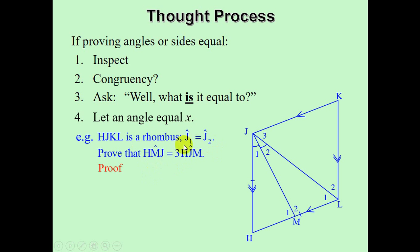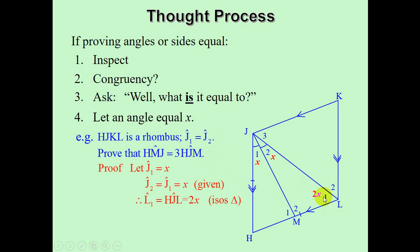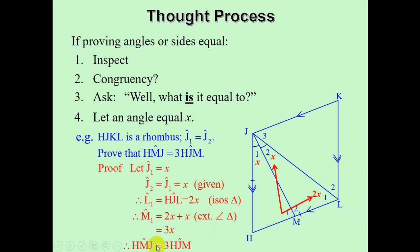Start off with the small angle HJM — let that angle be equal to X, so J1 is X. We need to find other angles in terms of X. You'll notice that J2 is also X, given that J1 equals J2. Next, angle L1 is equal to 2X, because we have an isosceles triangle — this is a rhombus, so JH equals HL. So if J1 and J2 add up to 2X, then L1 is 2X. Finally, M1 is an exterior angle of triangle JML, which gives us 3X. So we have proven that HMJ is equal to 3 times HJM.